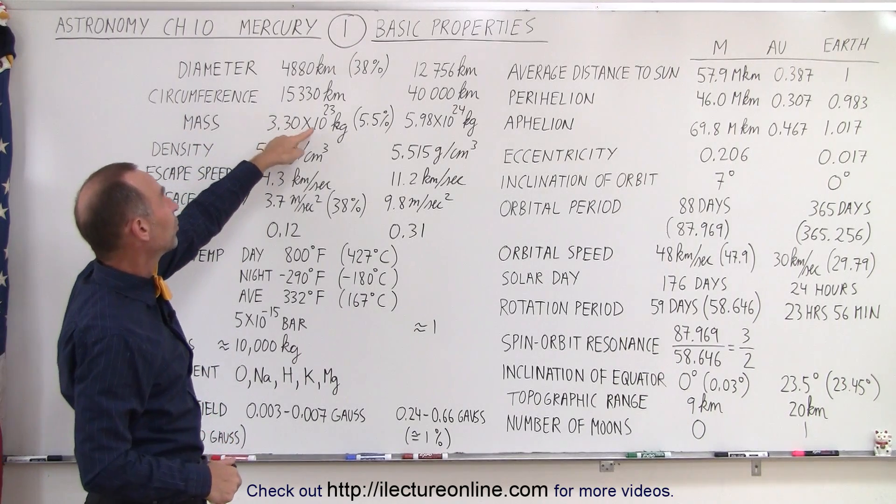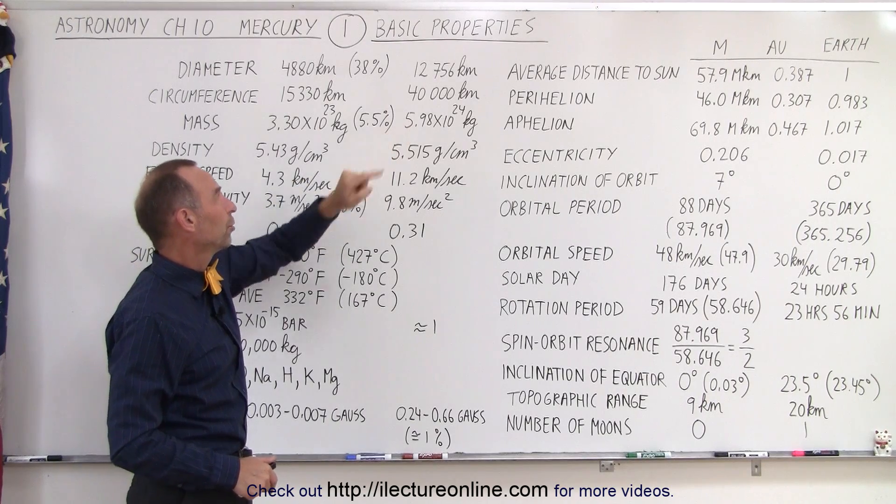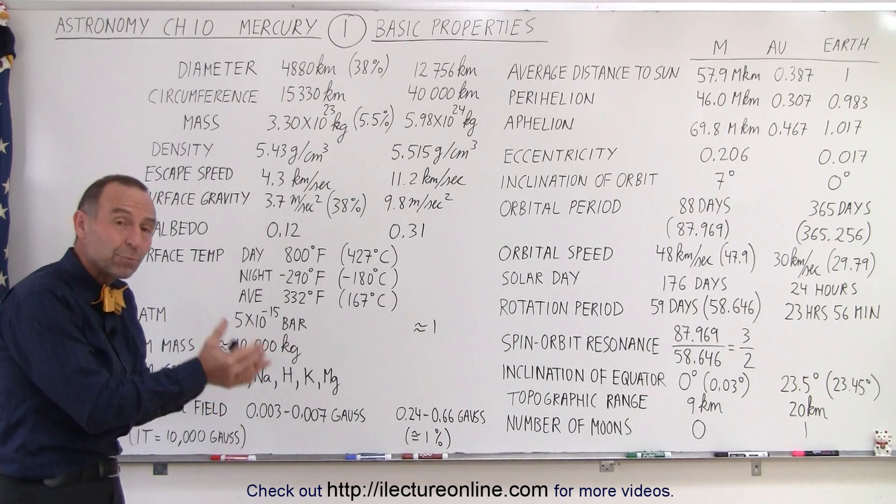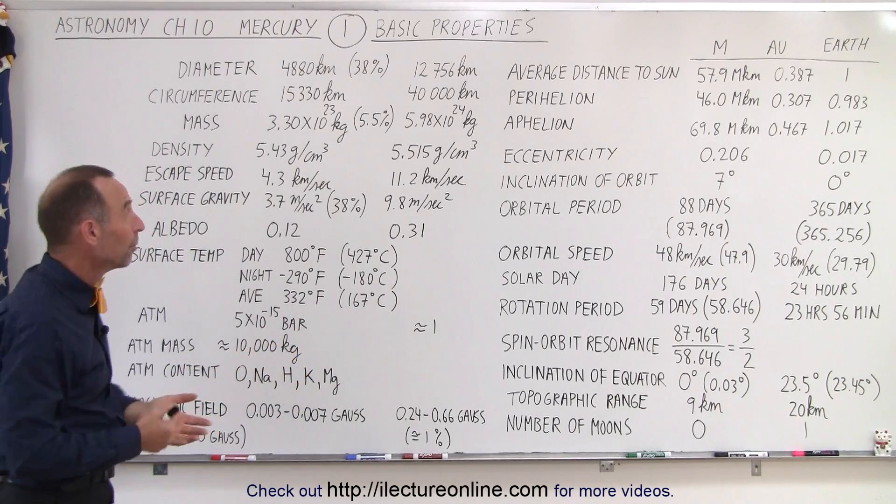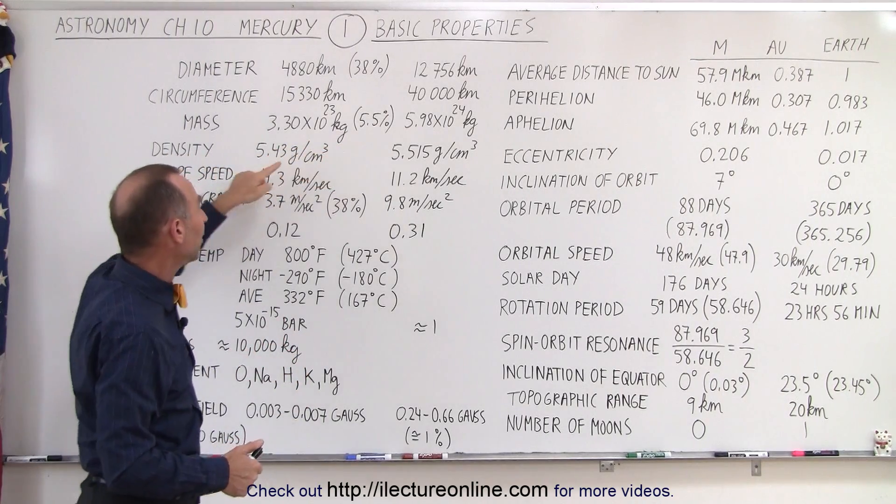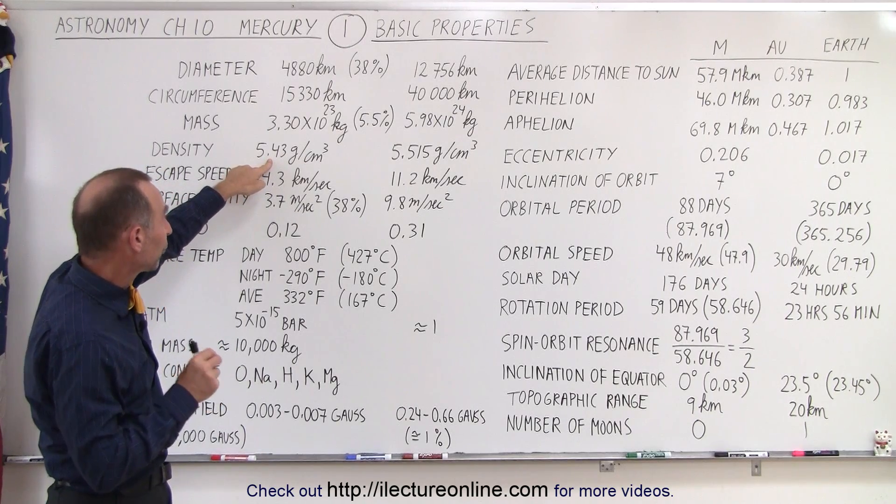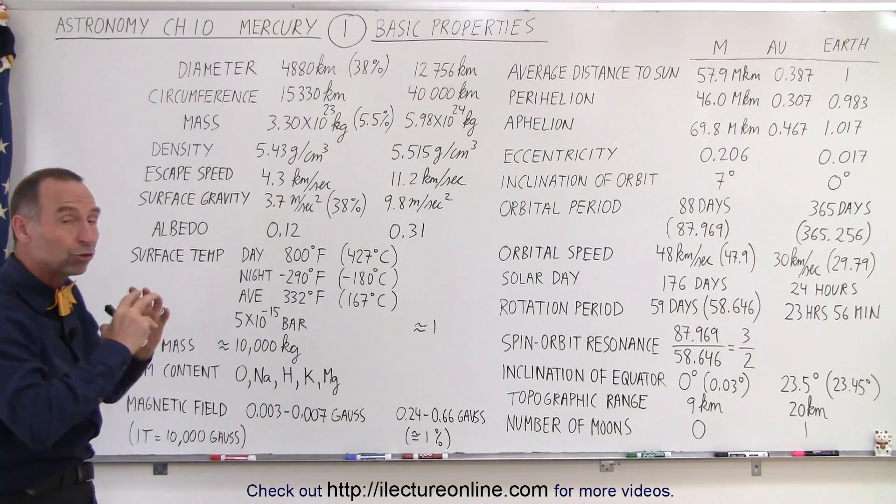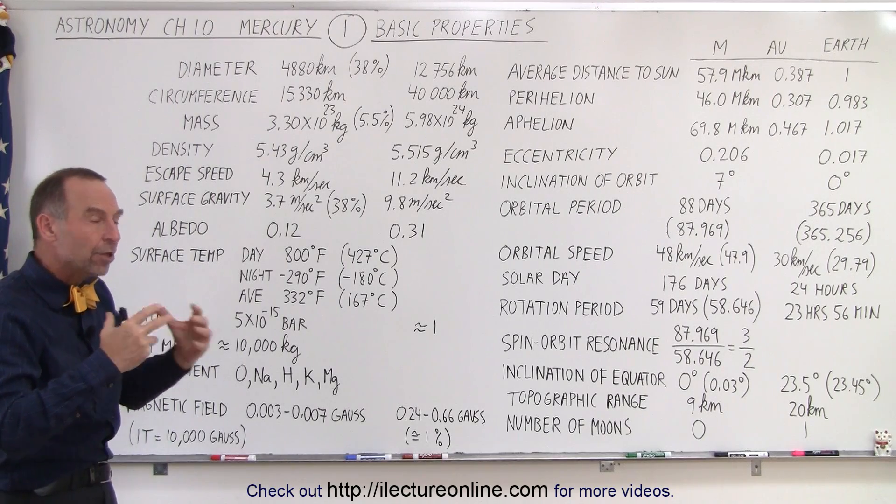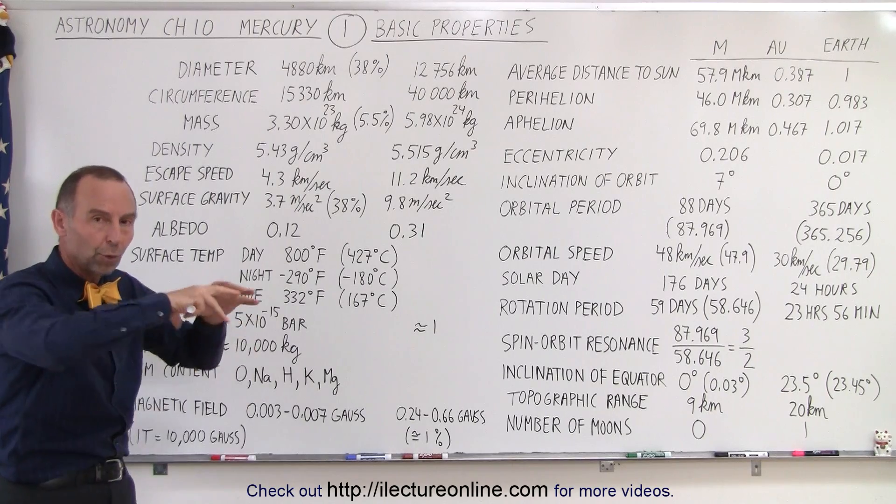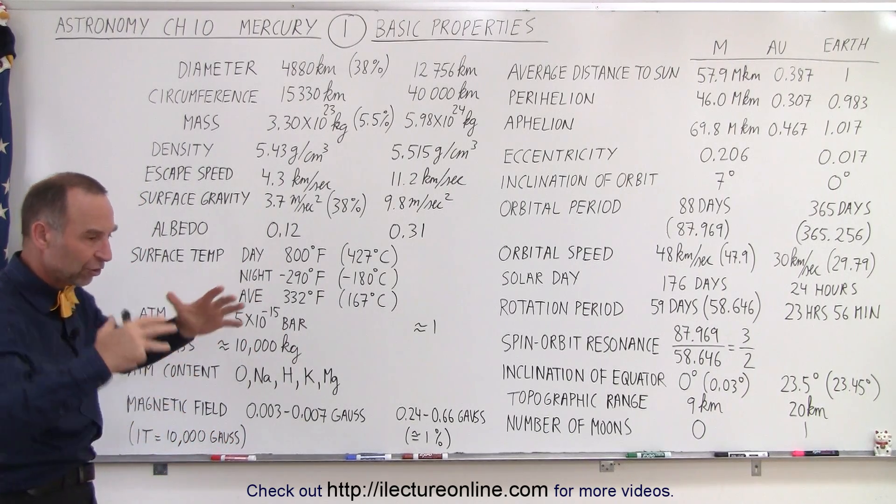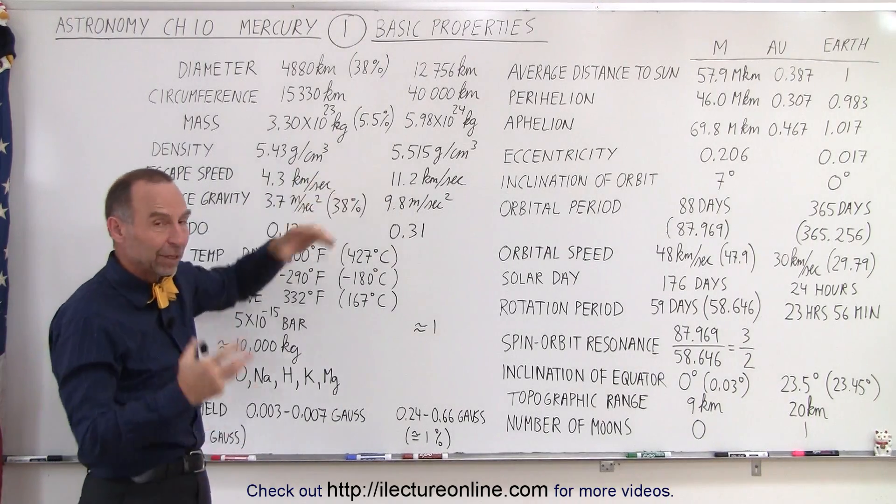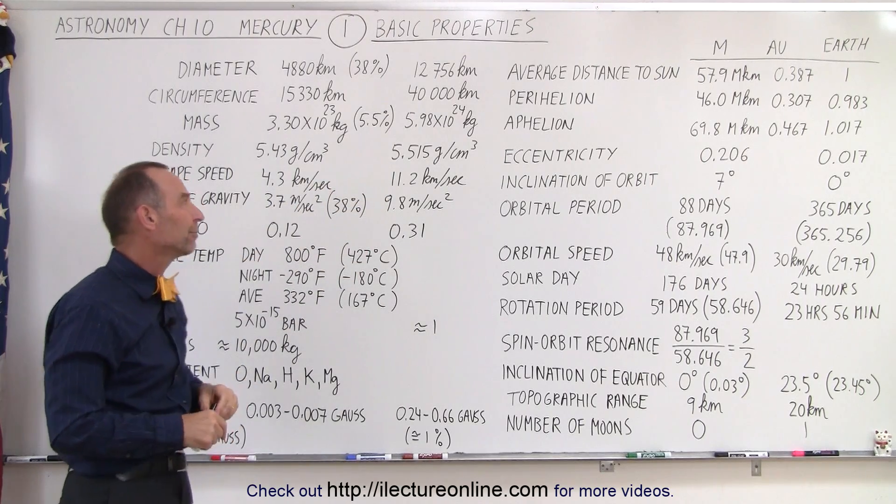Mass, 3.3 times 10 to the 23rd kilograms, as opposed to the Earth, which means it has a mass of about five and a half percent the mass of the Earth. Roughly, you would need 20 Mercurys to balance out one Earth, if you were able to put them on a scale. Density, they're very close in density. Mercury is slightly less, 5.43 grams per cubic centimeter, versus the Earth. Even though Mercury has a higher percentage of metal in its core, so from an uncompressed density, as we call it, Mercury is more dense than the Earth. There's more metal inside the planet. However, since the Earth is a much bigger planet, the metal is compressed to much higher densities at the center, so the average density because of that compression factor is actually a little bit higher for the Earth than Mercury.